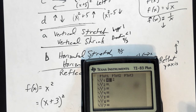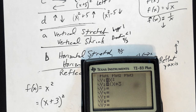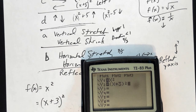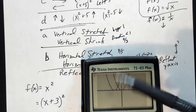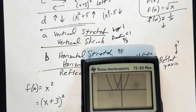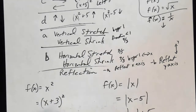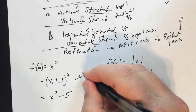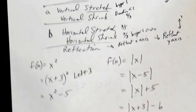Go down to Y2 and put in (x + 3) squared, just like we see it. The transformation shows what happened to the original function. When we graph it, here's the original and here's the new one — all the points went to the left three. That's a left shift of 3.